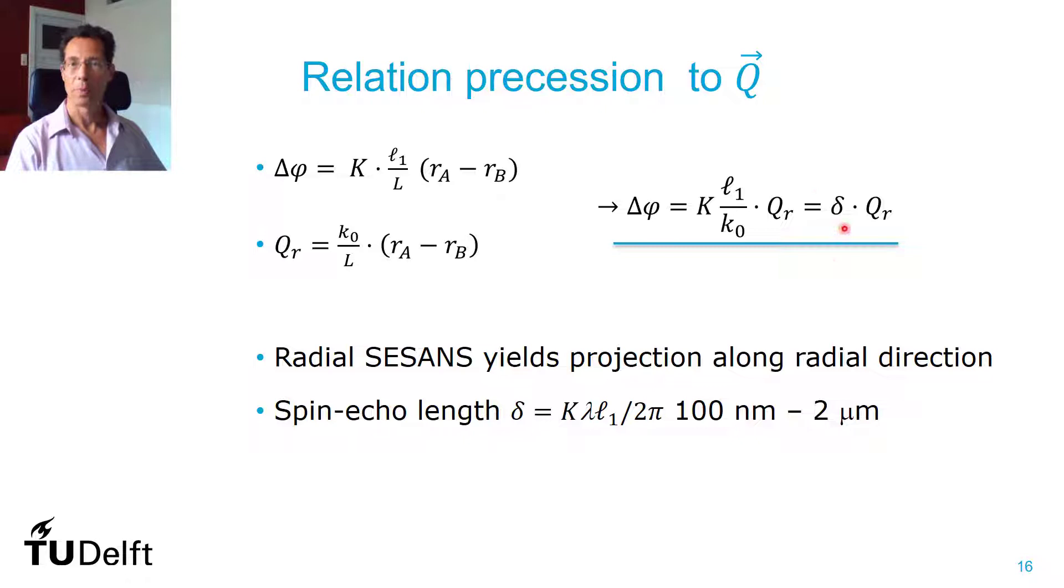If you now look at the parameters that you can have at a neutron spin echo spectrometer, which is the current you can have through the current sheets and the wavelength and the distances, then we think you can reach spin echo lengths of something like 200 nanometers up to 2 micrometers, which is pretty nice.